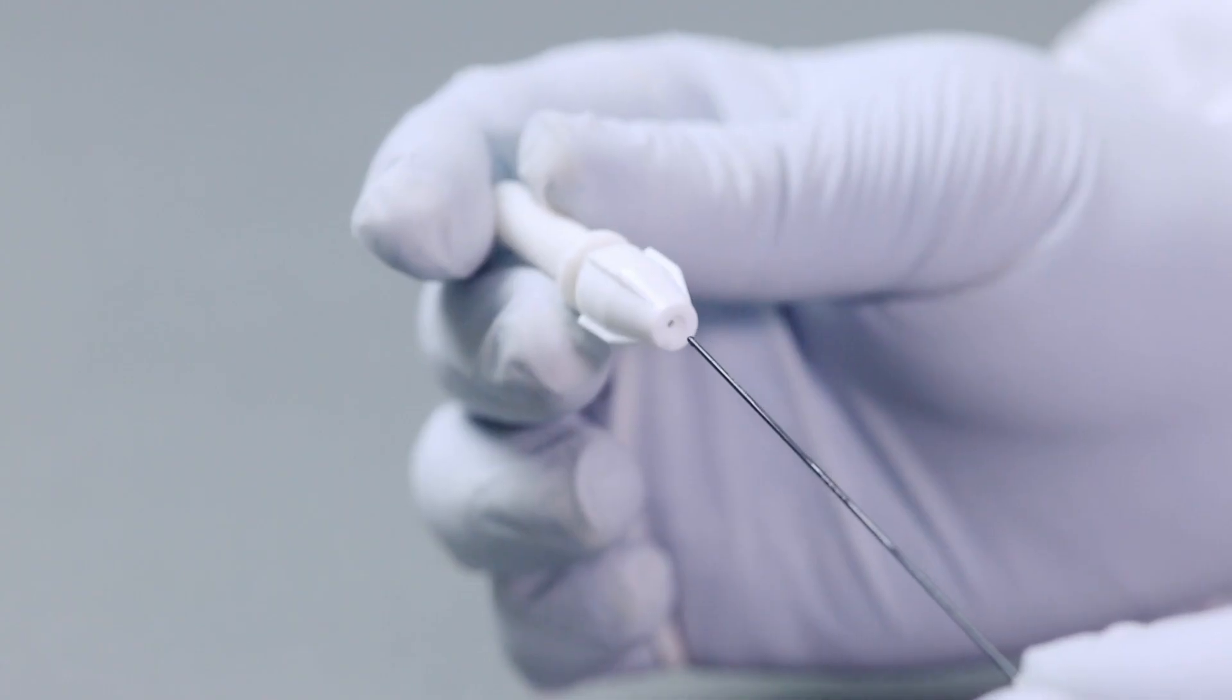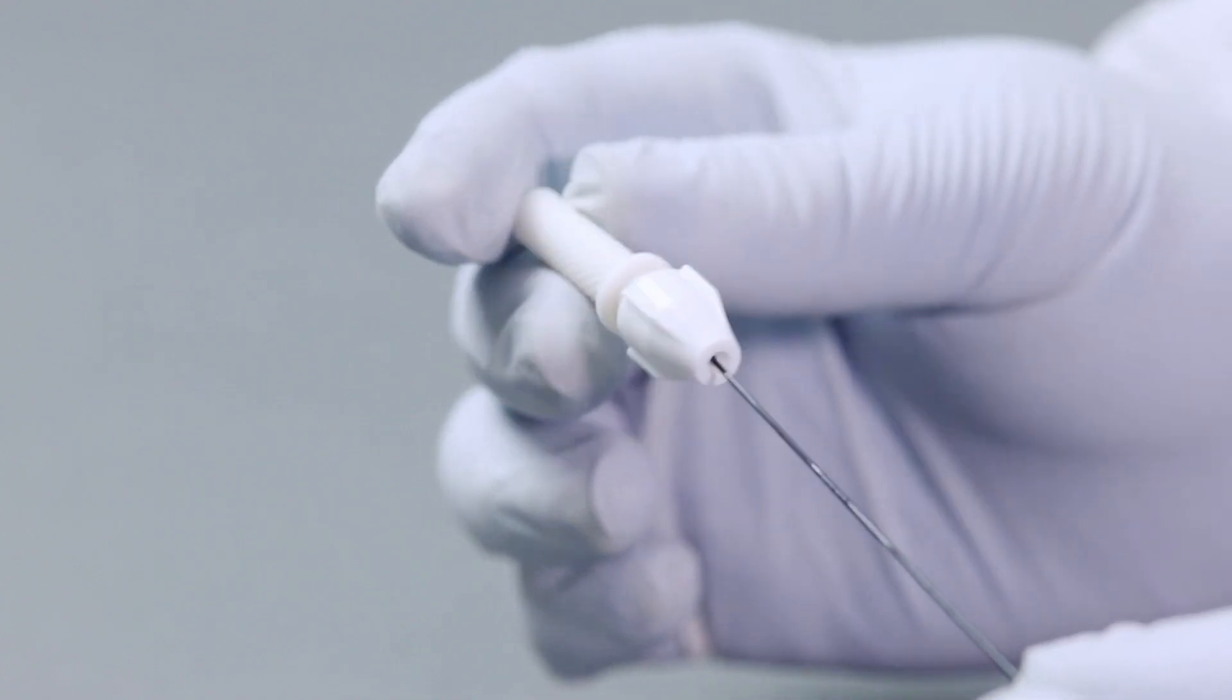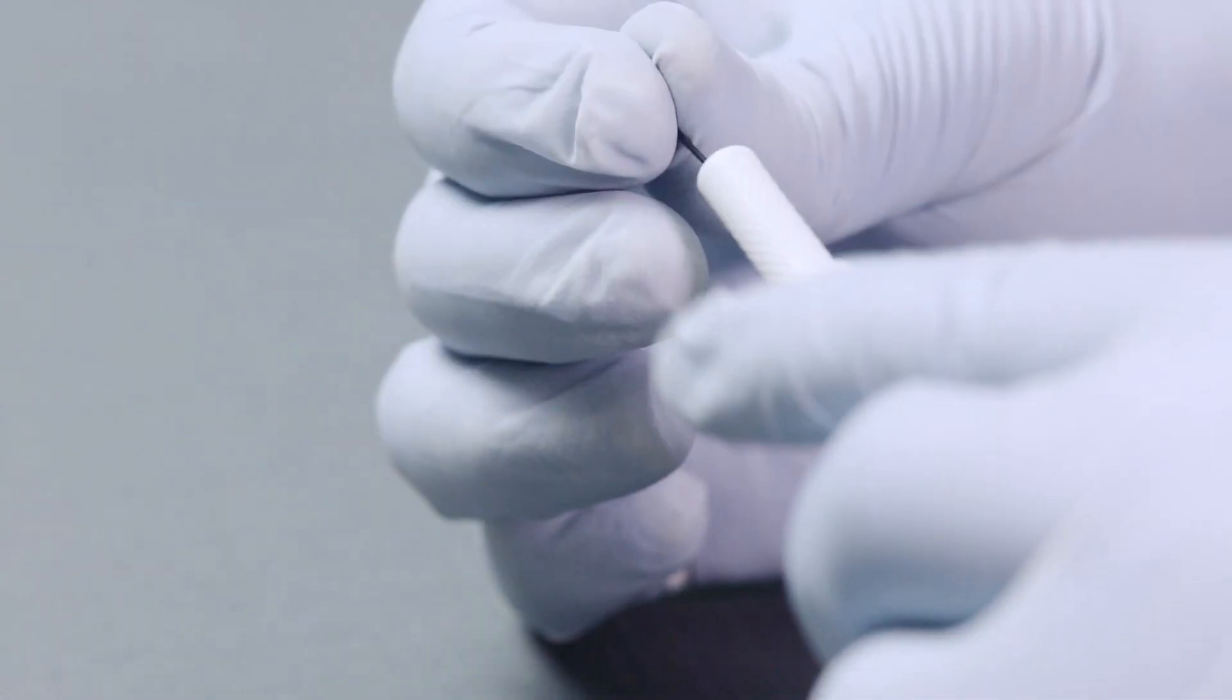If required, a torquer device can be loaded and locked to control the direction of the guide wire tip.